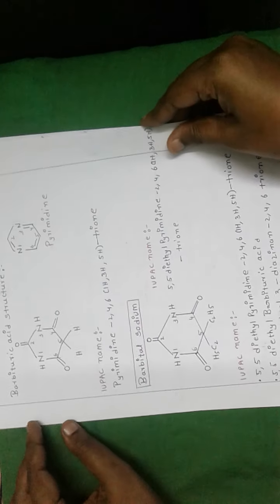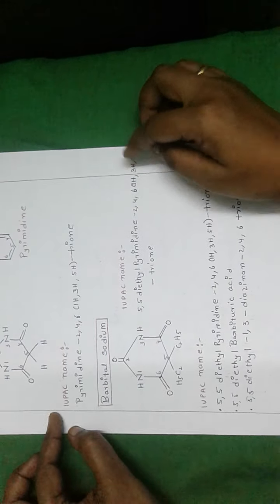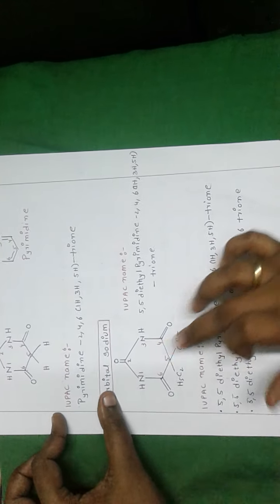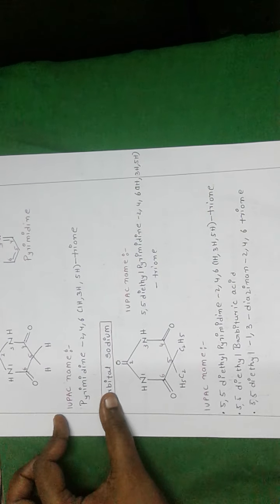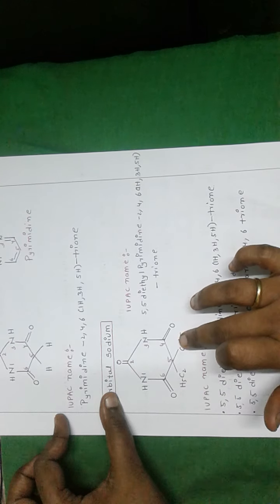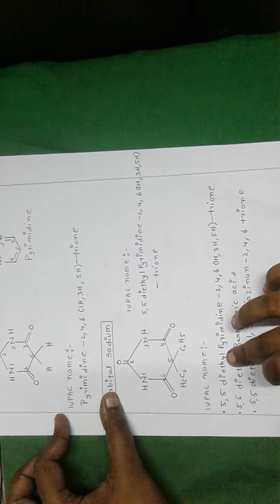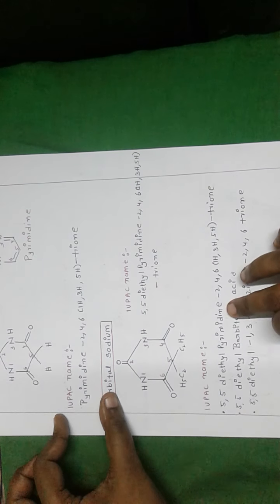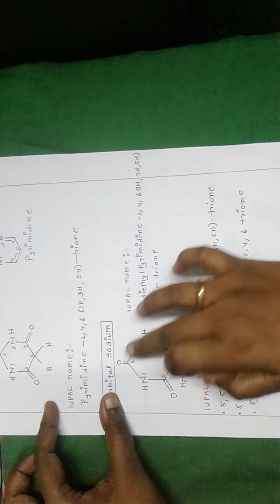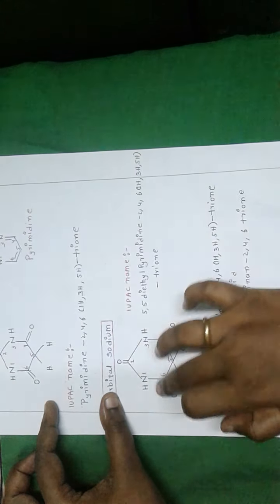Coming to the structure of barbital sodium. We name this compound in three ways. First way: '5,5-diethylpyrimidine' — at the fifth position, two ethyl groups are present, that's why 5,5-diethyl; and it contains a pyrimidine nucleus. Next: '2,4,6-trione' — at the second, fourth, and sixth positions it contains three ketone groups.